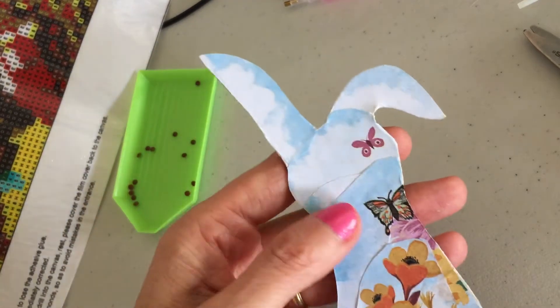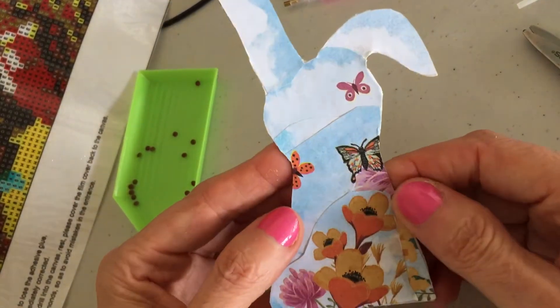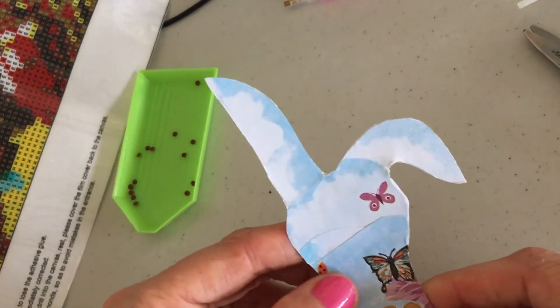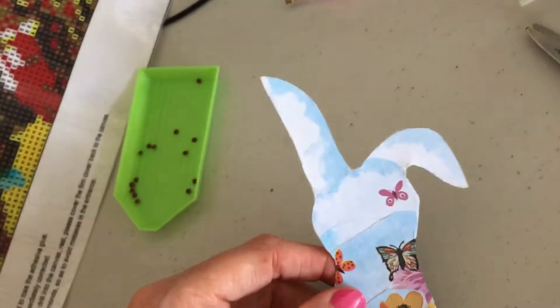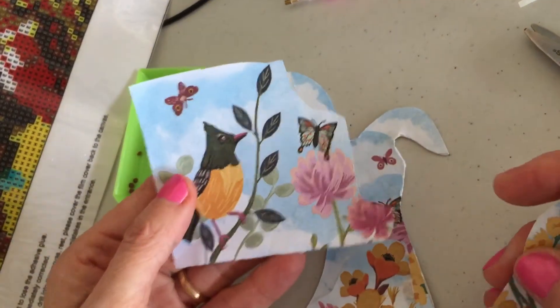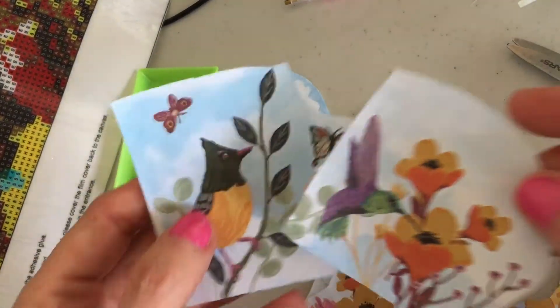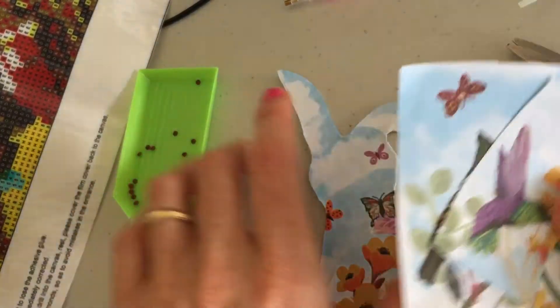I just have to mod podge him. Still don't know what I'm going to do with him, but that's just one of the bunnies. I'm going to make them a little different I think. If I have some more papers I might do that on one of the bunnies. This was all from, I think it was St. Jude's envelope. I thought they were pretty.